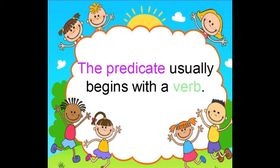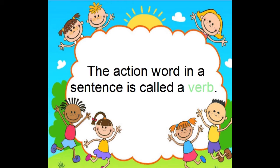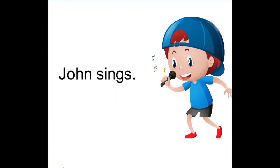The predicate usually begins with a verb. The action word in a sentence is called a verb. Let's practice and identify the subject and the verb.